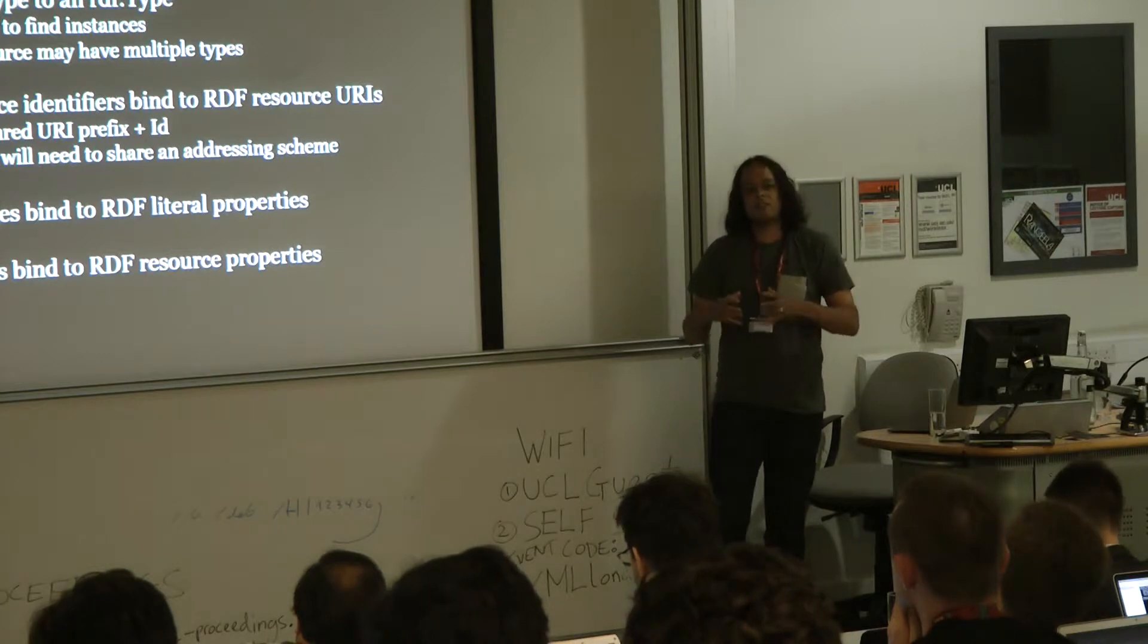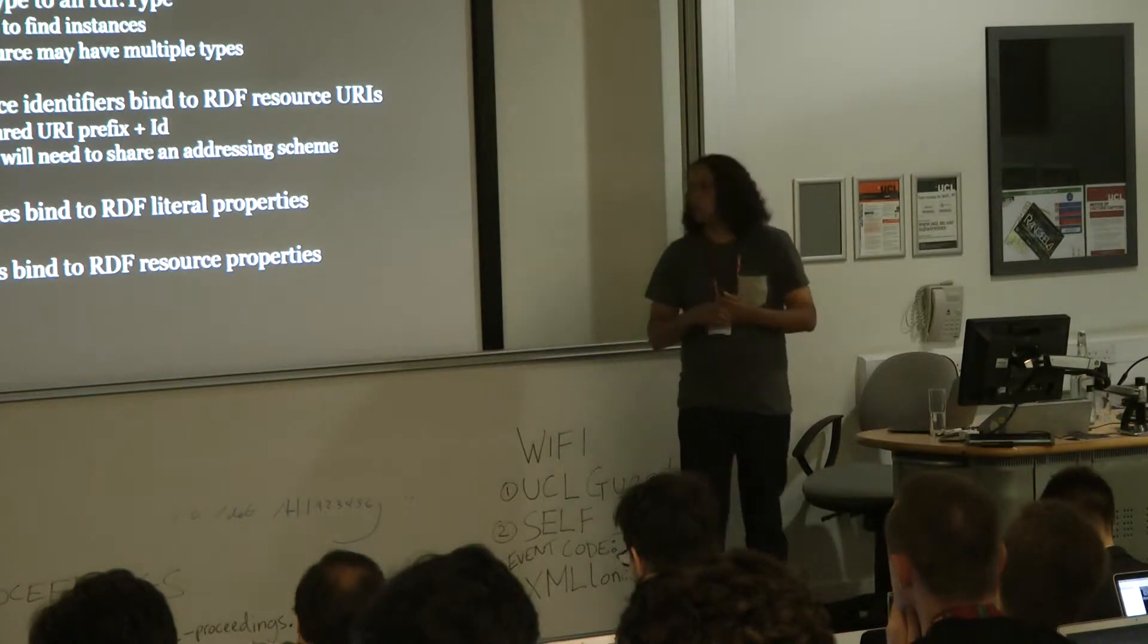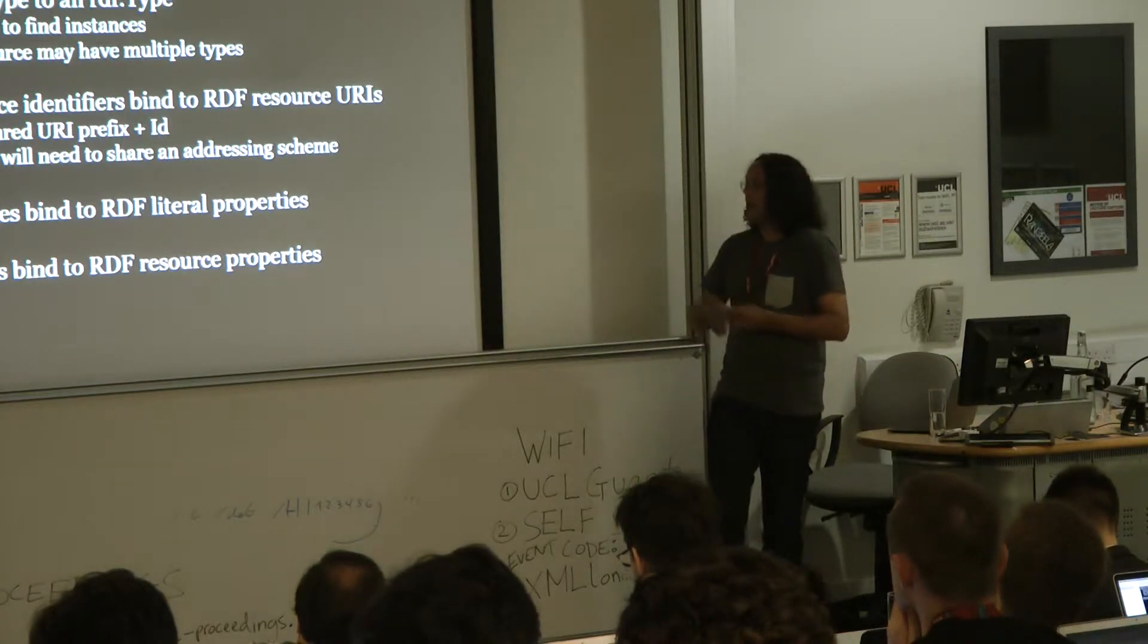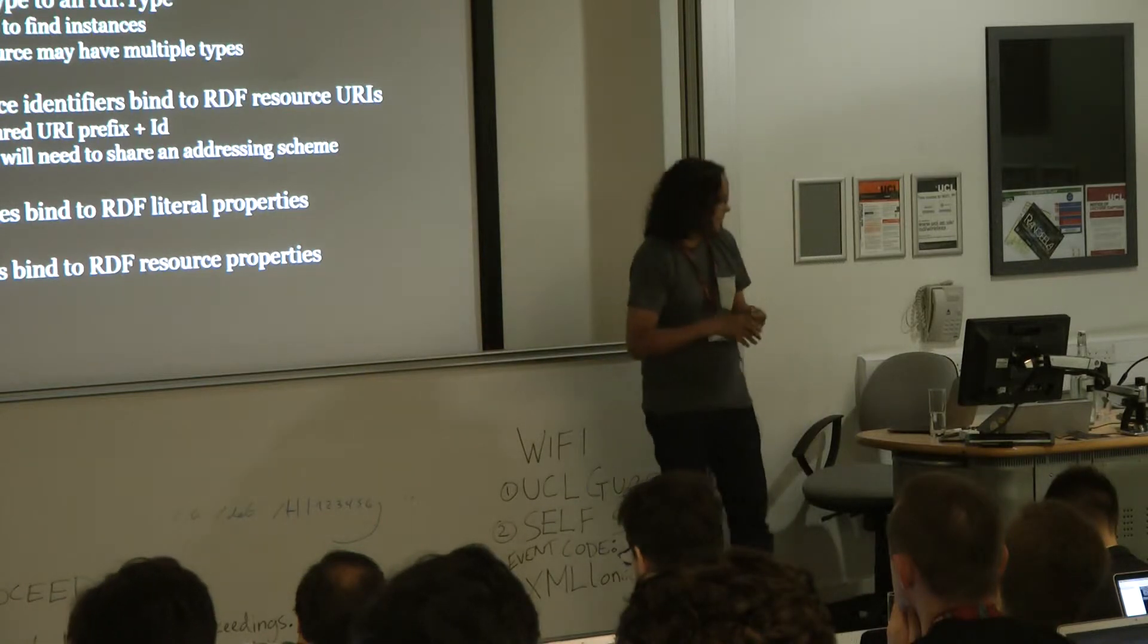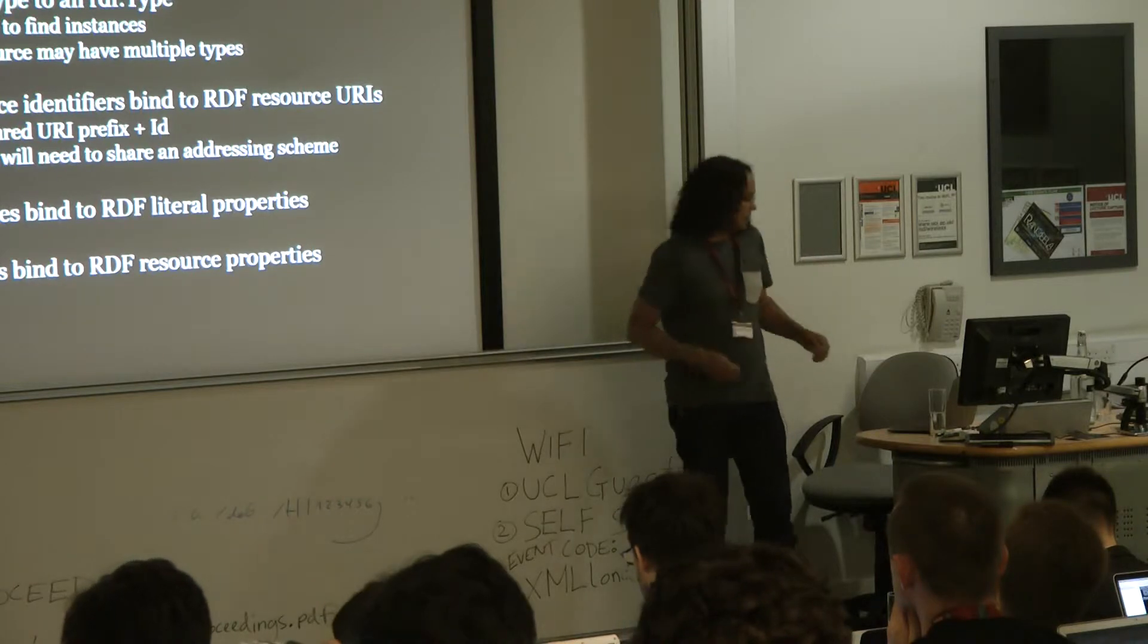You do need to have some kind of way of generating identifiers for your instances. And then you need to convert those into URIs because that's the way you're going to work with them in RDF. But, just have a prefix and then just slap the ID on the end of it. That does mean then that your applications do have some kind of connection between them because they've all got to use the same addressing scheme. But, that's kind of a small price to pay, I think. And then, you've got properties of classes that will bind to RDF literal properties, and you've got relations that bind to RDF resource properties. It's really straightforward stuff.